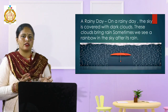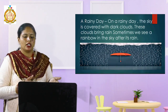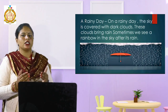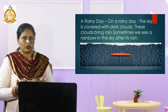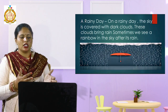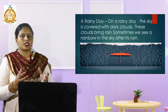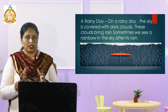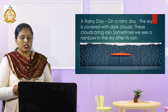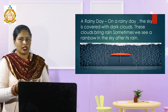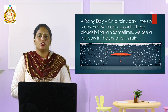Next is a rainy day. On a rainy day the sky is covered with dark clouds, and these clouds bring rain. Sometimes we see a rainbow in the sky after it rains. Here is an example picture of a rainy day.